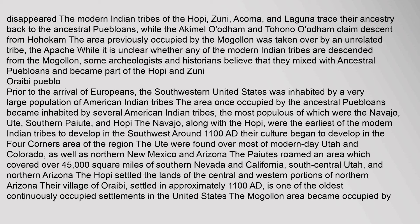Prior to the arrival of Europeans, the southwestern United States was inhabited by a very large population of American Indian tribes. The area once occupied by the ancestral Puebloans became inhabited by several American Indian tribes, the most populous of which were the Navajo, Ute, Southern Paiute, and Hopi. The Navajo, along with the Hopi, were the earliest of the modern Indian tribes to develop in the southwest around 1100 AD. Their culture began to develop in the Four Corners area. The Ute were found over most of modern-day Utah and Colorado, as well as northern New Mexico and Arizona. The Paiutes roamed an area covering over 45,000 square miles of southern Nevada and California, south-central Utah, and northern Arizona. The Hopi settled the lands of the central and western portions of northern Arizona. Their village of Orebi, settled in approximately 1100 AD, is one of the oldest continuously occupied settlements in the United States.